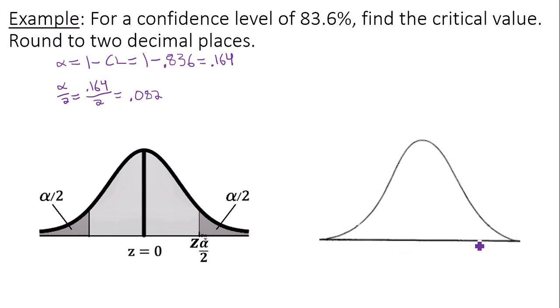This means that in my bell curve I want to know the data value or the z-score whose area to the right is 0.082. So the region to the right of this data value I'm trying to find is 0.082.